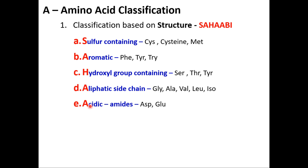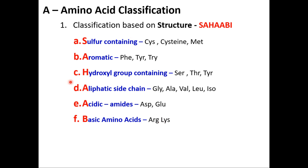Acidic and basic amino acids are straightforward. Acidic amino acids are those whose name contains the word 'acid' — aspartic acid and glutamic acid. There are only two acidic amino acids. Basic amino acids carry a positive charge — arginine and lysine. These are also present in histones of DNA. So: sulfur-containing = cysteine and methionine; acidic = aspartate and glutamate; basic = arginine and lysine. Also: aromatic = PTT; hydroxyl = STT.